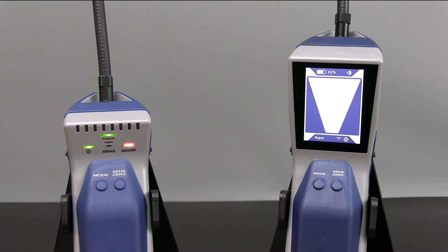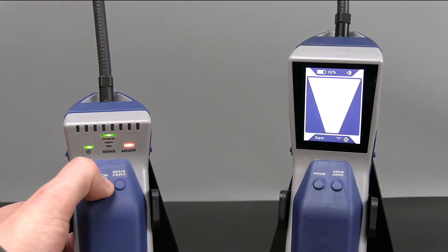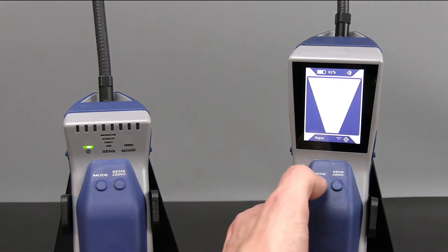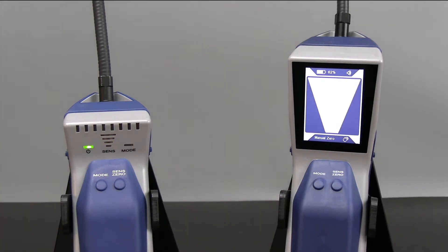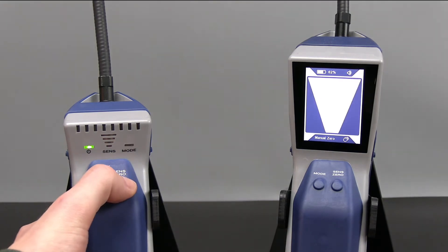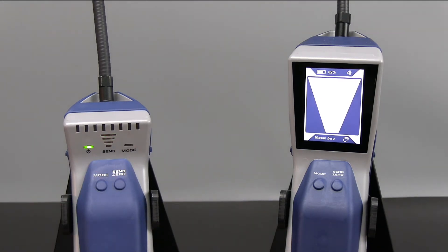Manual Zero Mode can be found in the DTEC 3 and DTEC Stratus. Manual Zero Mode allows you to manually zero to the background refrigerant by pressing the Sense Zero button.